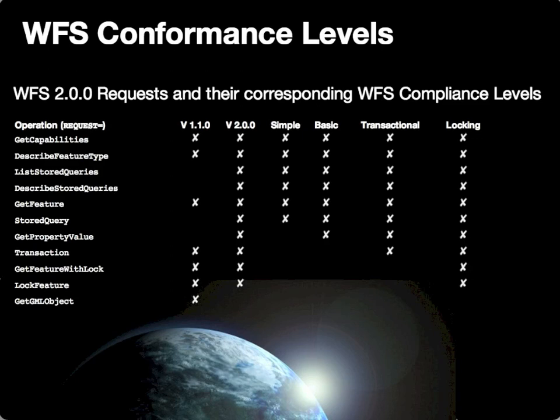You can also see in this table the difference between version 1.1.0 and version 2.0 requests. Version 1.1.0 supports the core GetCapabilities and DescribeFeatureType but has no support for any stored query capabilities — listing, describing, or executing stored queries — and no support for GetPropertyValue, which was only defined in version 2.0. Version 1.1.0 also had an additional GetGMLObject request that was removed from version 2.0 forward, as the GetFeature request can serve the same purpose.